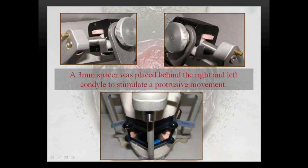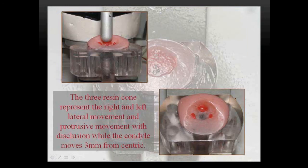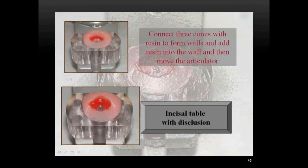A 3 mm spacer is placed behind both right and left condyles to simulate the 3 mm protrusive position. The incisal pin shifts backward and upward, and a resin cone is placed there. Three resin cones are obtained, joined using resin with the space filled, and molded again to get the incisal table with disclusion.